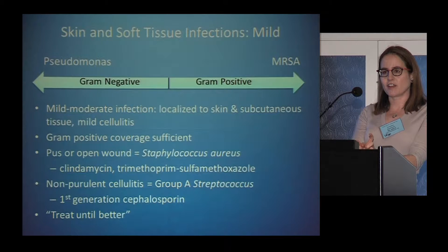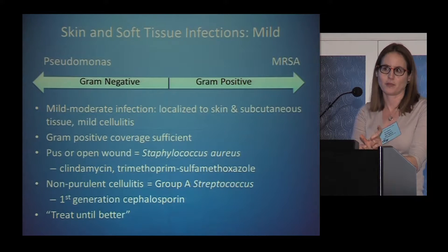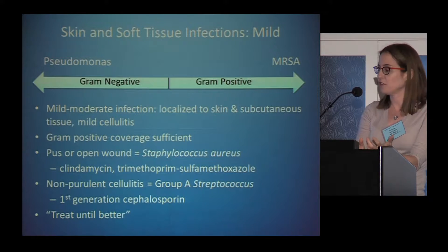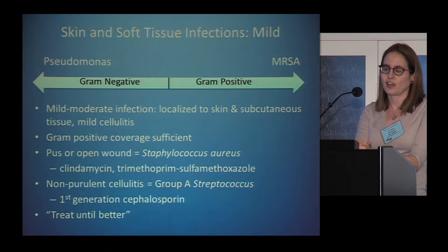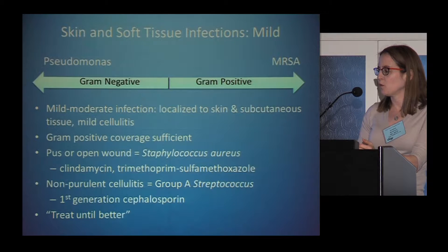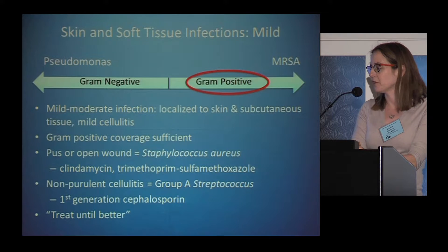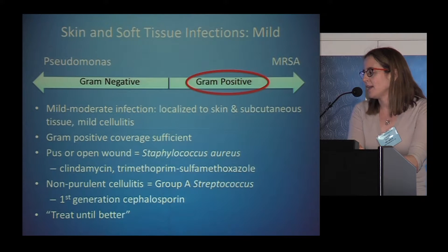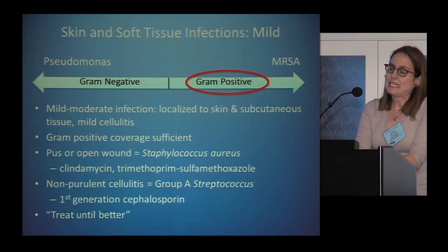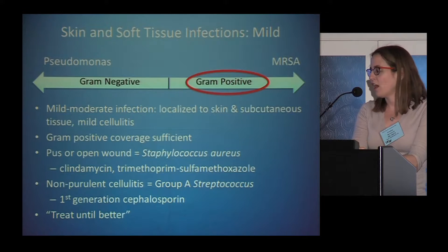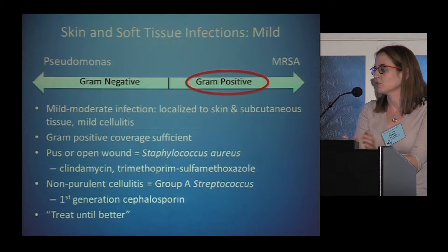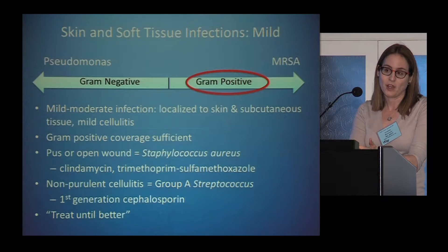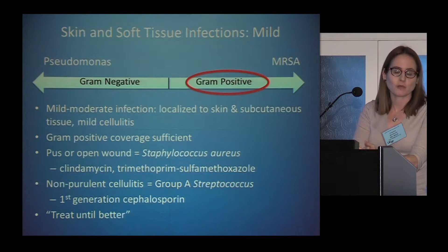I'll talk about skin and soft tissue infections, then focus more on osteo, because osteomyelitis is the harder one to treat. With mild skin and soft tissue infections, you really only have to cover gram-positives — not much worry about gram-negatives. Mild means localized to skin and subcutaneous tissue, maybe a little cellulitis, but the patient is not sick in the hospital. If there's pus or an open wound, you have to think about staph aureus — clindamycin or trimethoprim-sulfamethoxazole are your go-tos. If there's no pus, especially with cellulitis, we attribute this to group A strep, so a first-generation cephalosporin suffices and you don't need MRSA coverage.